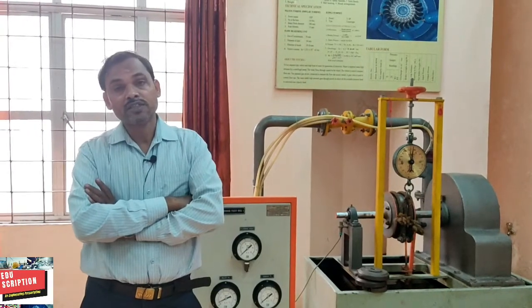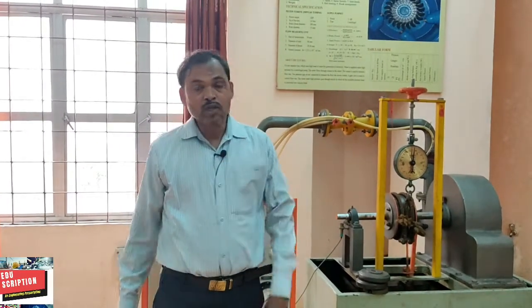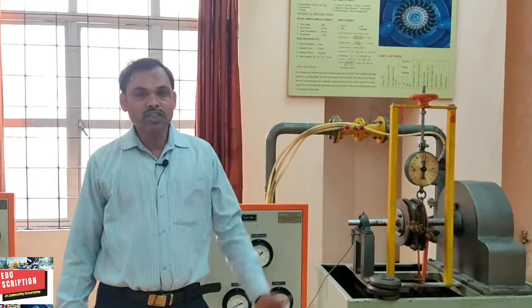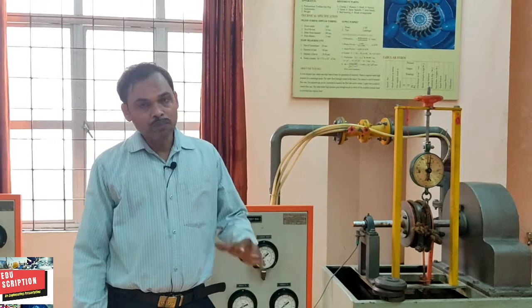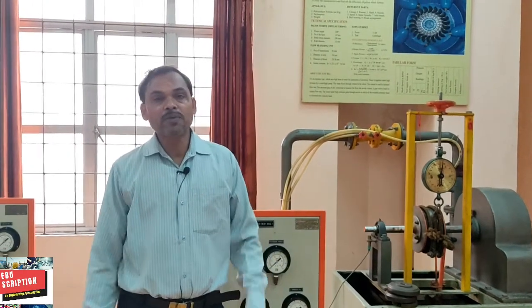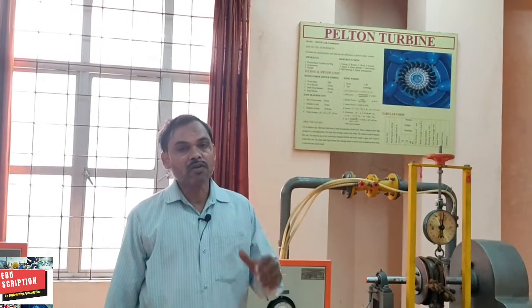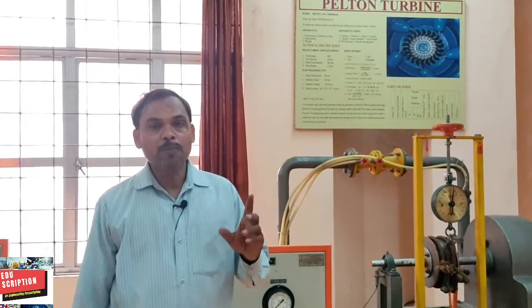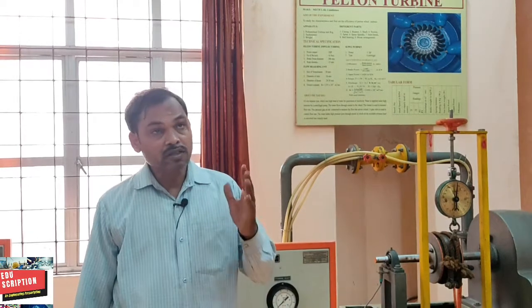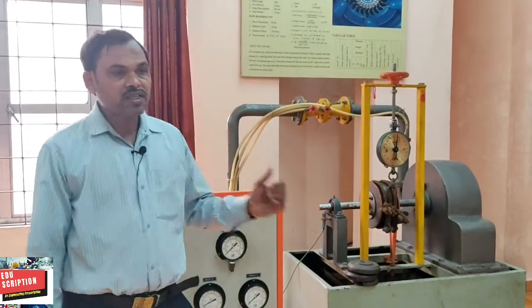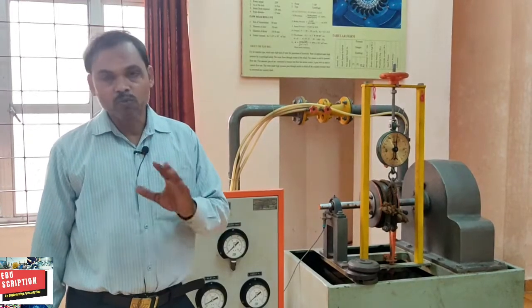Okay, my dear students, welcome to Eduscription. Today the fourth experiment is about the Pelton wheel turbine. The aim of the experiment is to study the characteristics and find out the efficiency of a Pelton wheel turbine. The basic apparatus includes Pelton wheel turbine test rig, tachometer, and some weights.